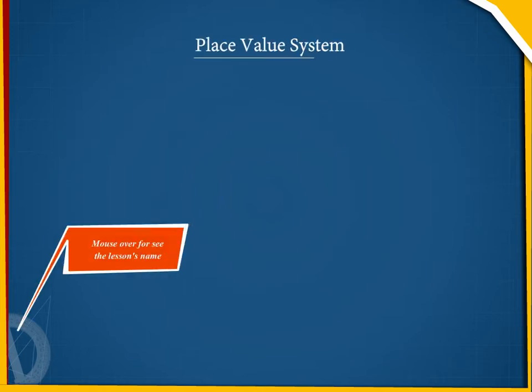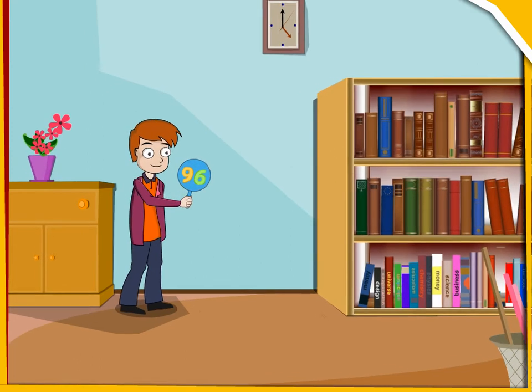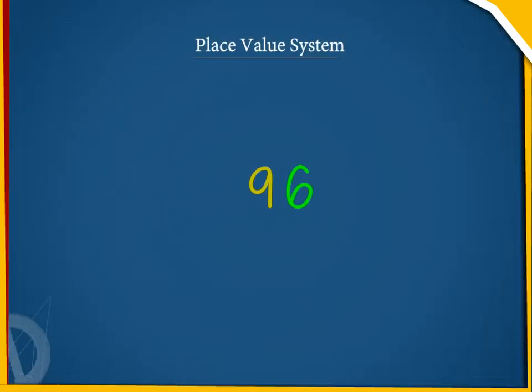Tony takes a two-digit number, 96. Each digit has a different place value.